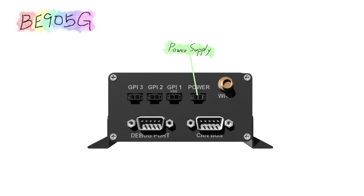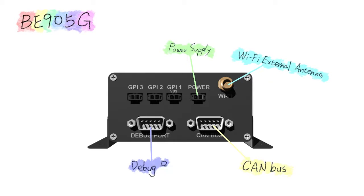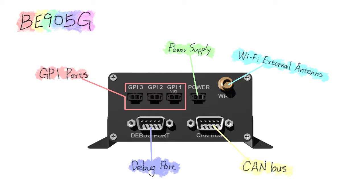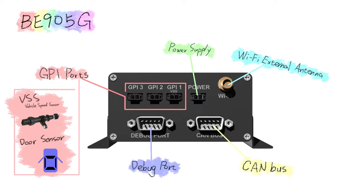BE905G requires DC 6 to 36 voltage and it connects directly to the generator of the car. It will detect driving information and send it to the control center by 3G network.